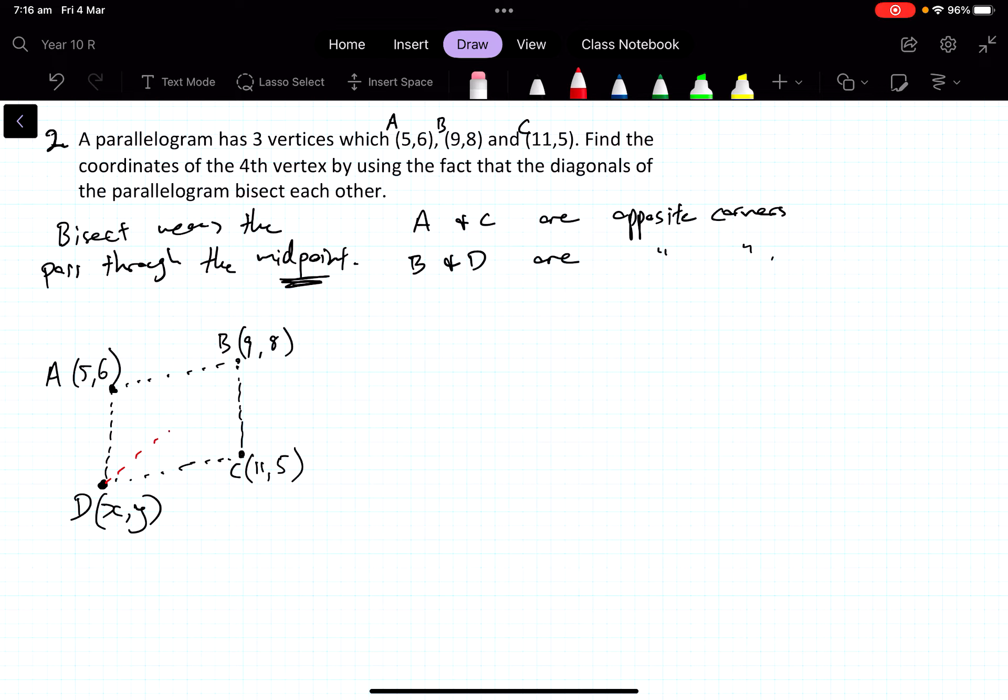So what we're saying is diagonals bisect each other, which means they pass through their midpoints. So that's equal to that, and that is equal to that.